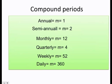Before that, we need to understand the compound period. When they tell you that it's annually, you're going to make M equals 1. Semi-annually, M equals 2. Monthly, M equals 12. Quarterly, 4. Weekly, 52. And daily, 360.